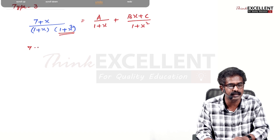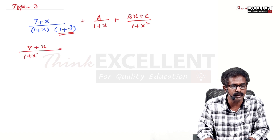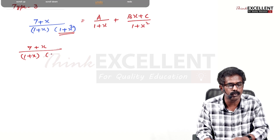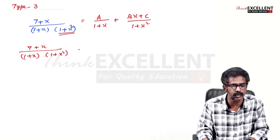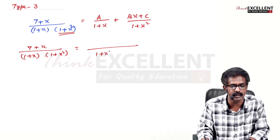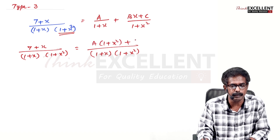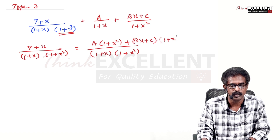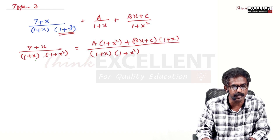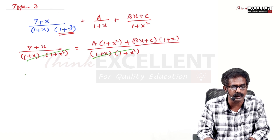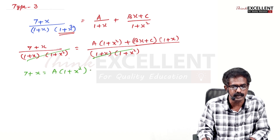The left side is (7+x) / [(1+x)(1+x²)]. Taking LCM as (1+x)(1+x²) and canceling denominators, you get: 7+x = A(1+x²) + (Bx+C)(1+x).